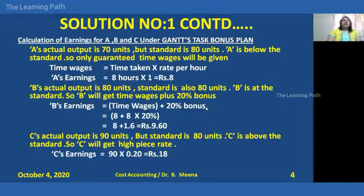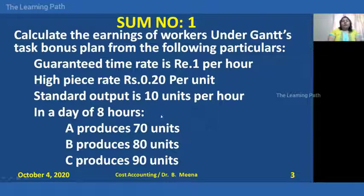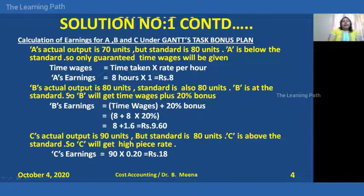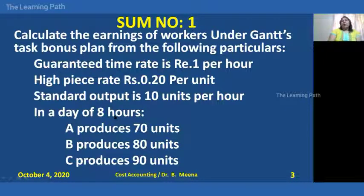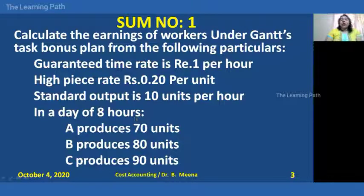We need to calculate the standard output for 8 hours. If 1 hour equals 10 units, then for 8 hours the standard output is 80 units. Now looking at the actual output: Worker A produces 70 units, which is below the standard of 80 units, so A will get only time wages. Worker B produces 80 units, which is equal to the standard, so B gets time wages plus 20% bonus. Worker C produces 90 units, which is above the standard, so C gets the high piece rate.